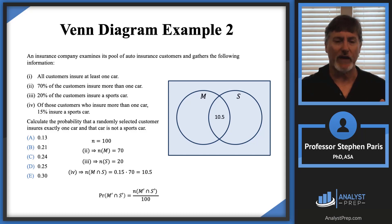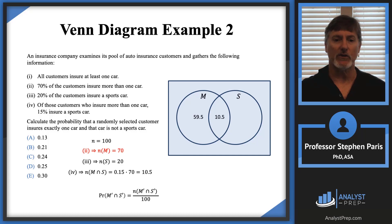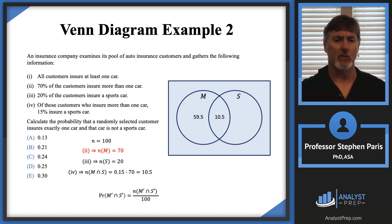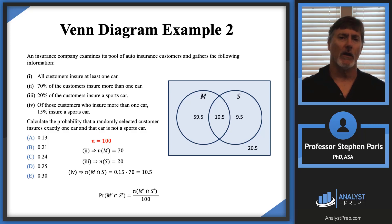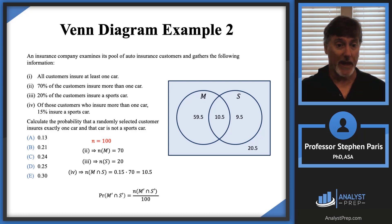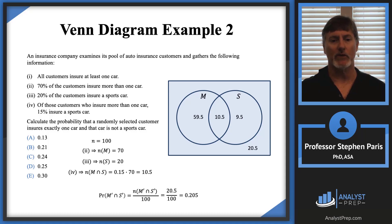Moving outward from the intersection: there were 70 in event M, we've accounted for 10.5, so 59.5 are in M but not S. For event S, there were 20 outcomes, minus 10.5 already counted, leaving 9.5 in S but not M. Adding 59.5 + 10.5 + 9.5 = 79.5, so 20.5 must be outside both M and S. That region — M prime intersect S prime — is what we want: 20.5 / 100 = 0.205.